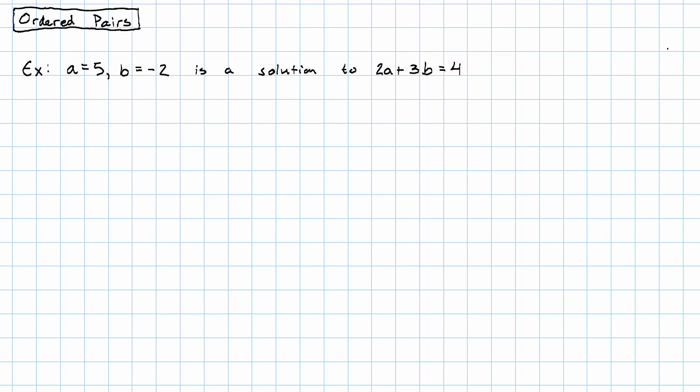The pair A equals 5, B equals negative 2 is a solution to the equation 2A plus 3B equals 4. That's fine, but we would like a simpler way to state that solution.